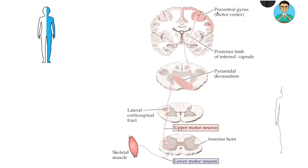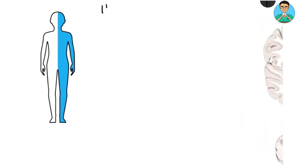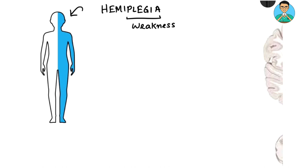In our neurology postings, one word that we hear repeatedly is hemiplegia. Hemiplegia means weakness of one side of the body, as you can see in this image. Hemiplegia is a neurological manifestation — weakness simply means motor deficit, meaning a motor attribute is present.